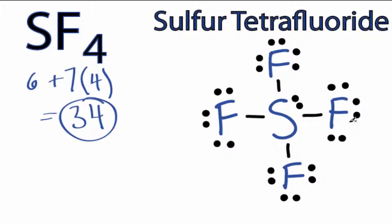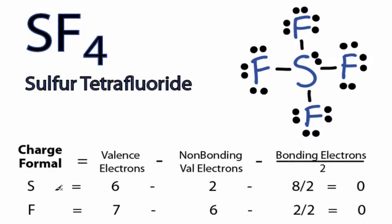Let's check the formal charges and make sure that this is the best structure for sulfur tetrafluoride. Sulfur has 6 valence electrons. If you look at the periodic table, it has 2 of these non-bonding and a total of 8 bonding valence electrons, which we'll divide by 2. That gives us 0. That's the formal charge for sulfur.